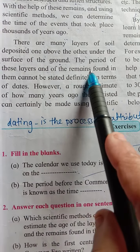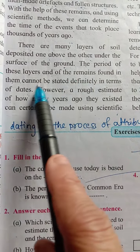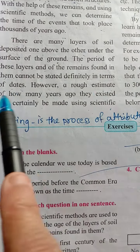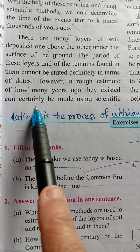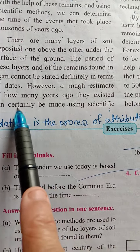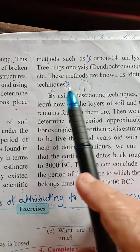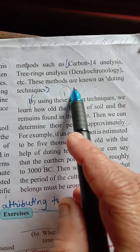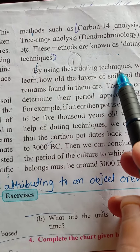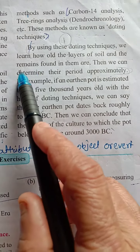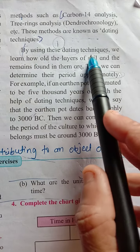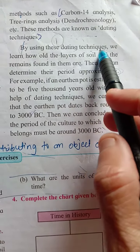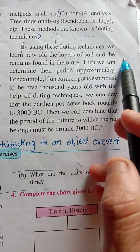The period of these layers and of the remains found in them cannot be stated definitely in terms of date. However, a rough estimate of how many years ago they existed can certainly be made using the scientific method. By using dating techniques such as Carbon-14 analysis and tree-ring analysis, we learn how old the layers of soil and the remains found in them are.